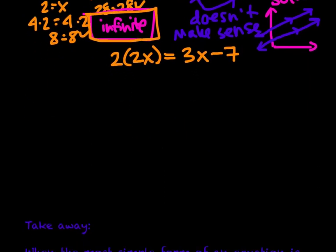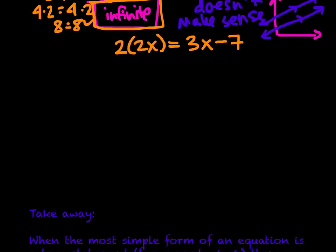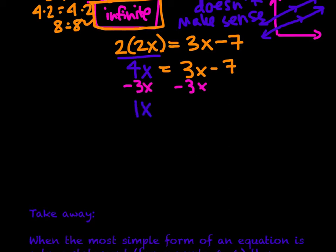Let's look at one last equation. We have 2x is equal to 3x minus 7. Let's do the math. We have 2 times 2x, or we can say that is 4x, is equal to 3x minus 7. From here, we can subtract 3x from both sides. So 4x minus 3x would give me just 1x, and that is equal to 3x minus 3x is 0, or negative 7 is left over. So x is equal to negative 7.